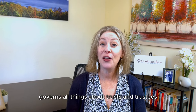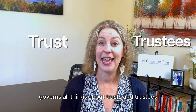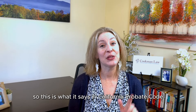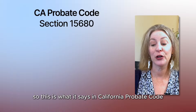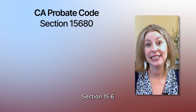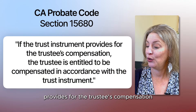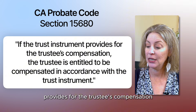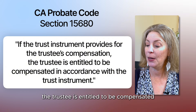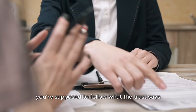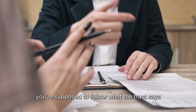In California, the California Probate Code governs all things about trusts and trustees and it does cover trustee compensation. California Probate Code section 15680 says: if the trust instrument provides for the trustee's compensation, the trustee is entitled to be compensated in accordance with the trust instrument. So basically you're supposed to follow what the trust says.